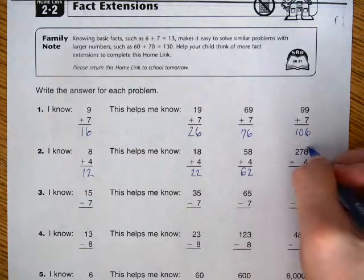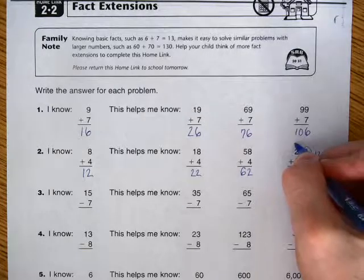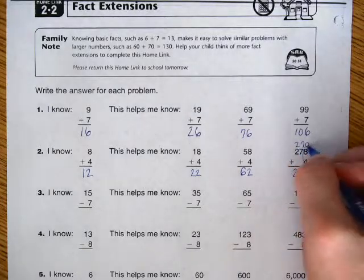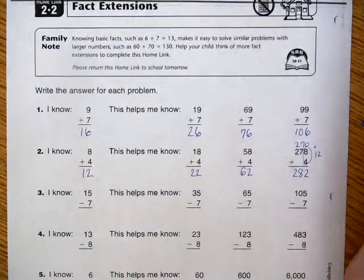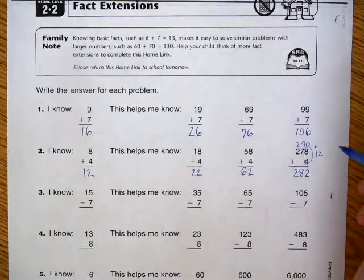So you know that this is equal to 12, and then you have 270, and plus 12 is 282. So that's how you can use fact extensions to help you do more advanced problems.